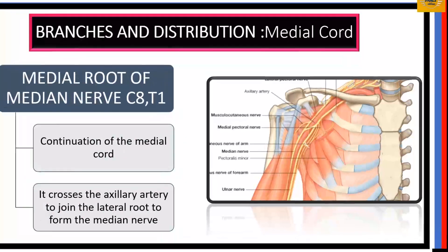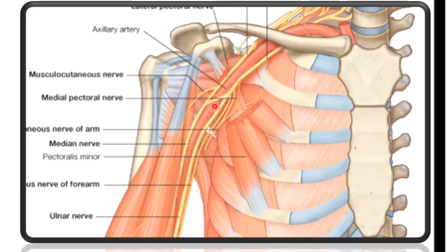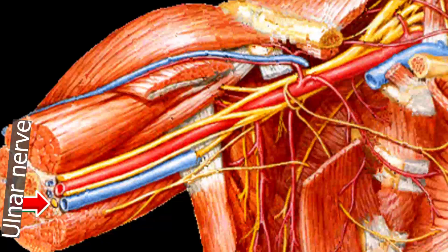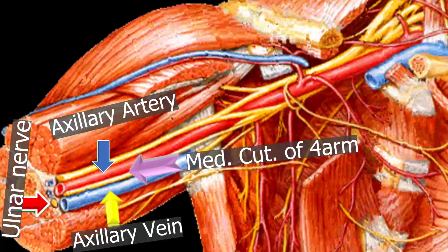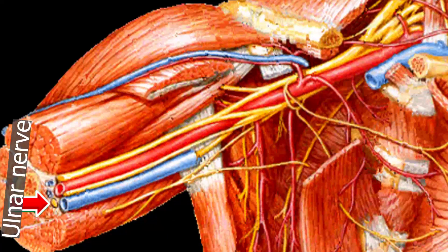The medial root of the median nerve comes from the medial cord and crosses the axillary artery to fuse with the lateral root, forming the median nerve. The ulnar nerve is the largest branch of the medial cord and runs down between the axillary artery and vein. The medial cutaneous nerve of the arm is superficial, with the ulnar nerve deep to it, the axillary artery laterally, and the axillary vein medially. The ulnar nerve is the most posterior structure and runs down the medial side of the flexor compartment of the arm.